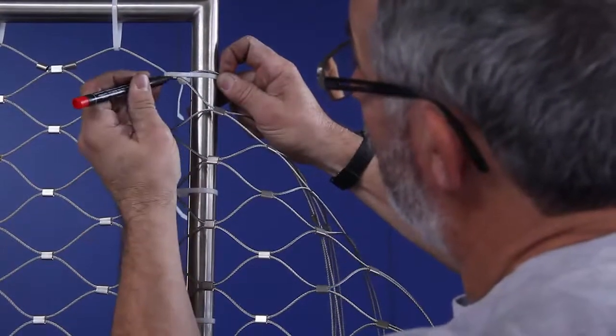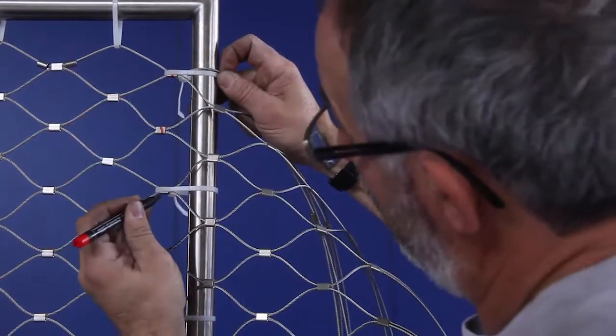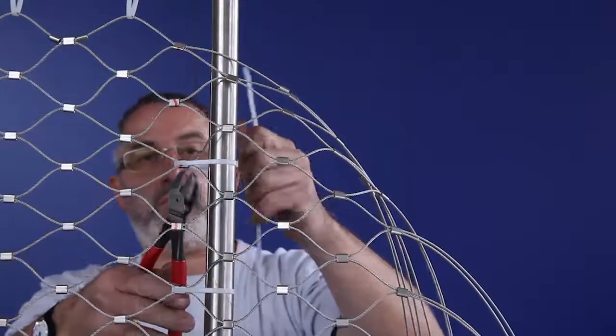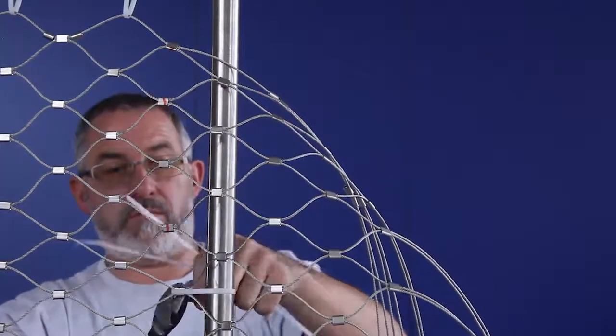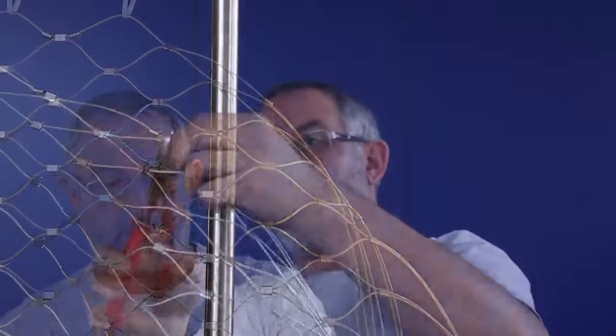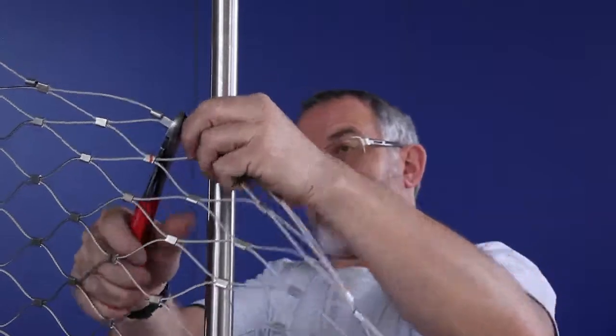Mark a vertical line at the end of the mesh, which will be cut later on. Cut off all the cable ties on the open sides. Cut off the net alongside the mark.